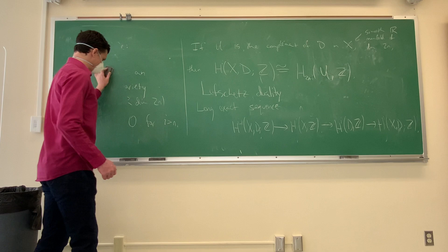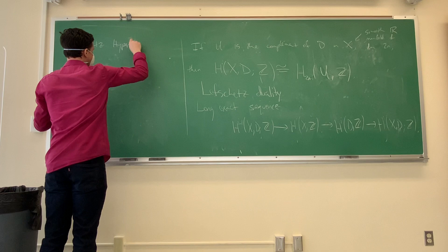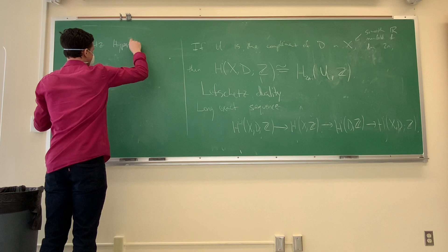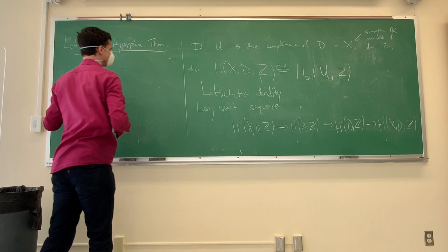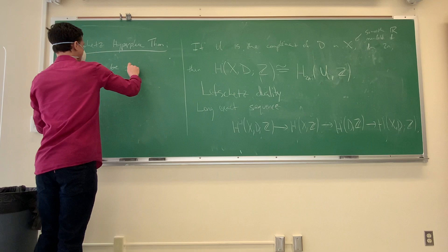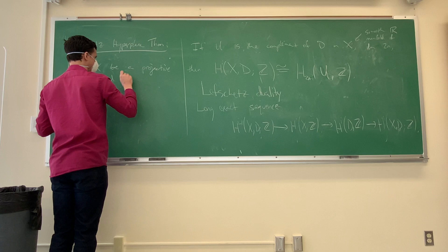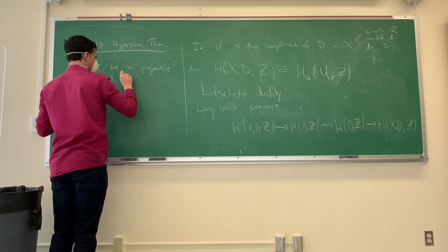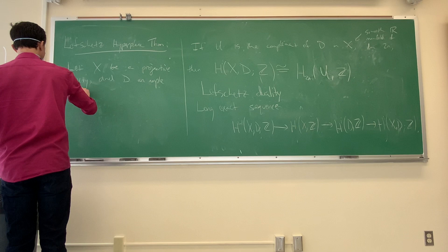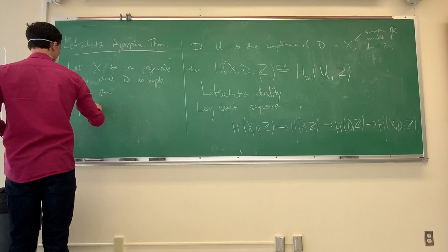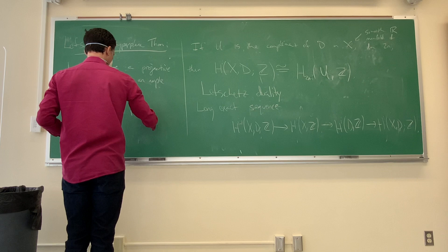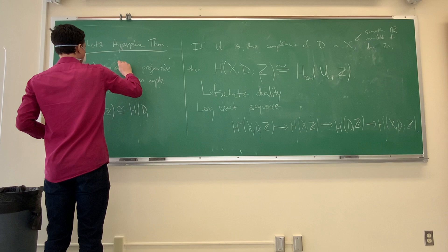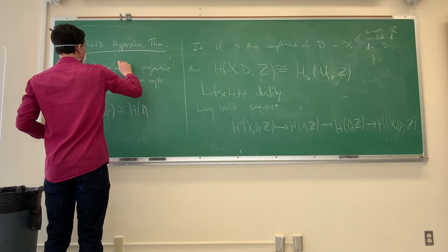Let me state the Lefschetz Hyperplane Theorem. It says: let X be a projective variety of dimension N, and D an ample divisor. Then H^i(X; Z) is isomorphic to H^i(D; Z) for appropriate values of i.